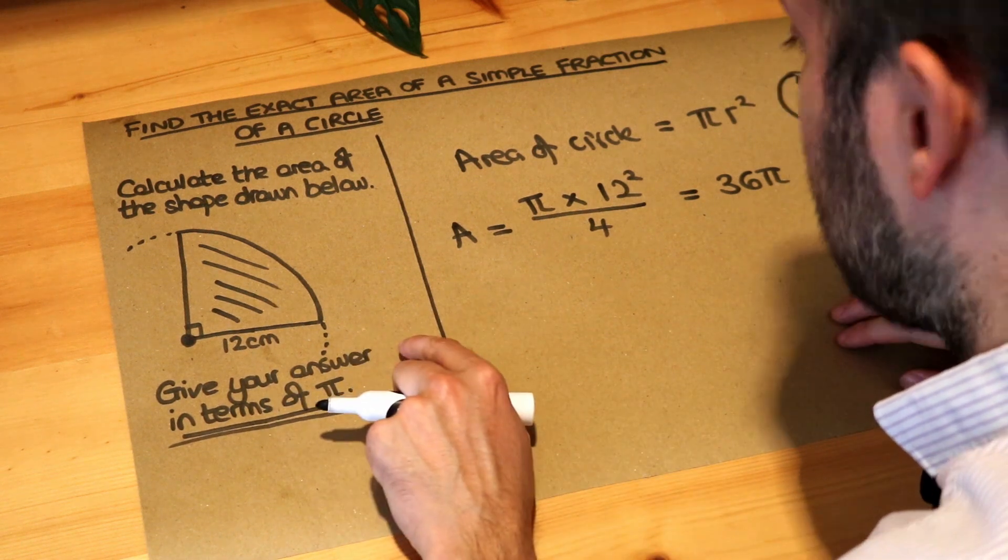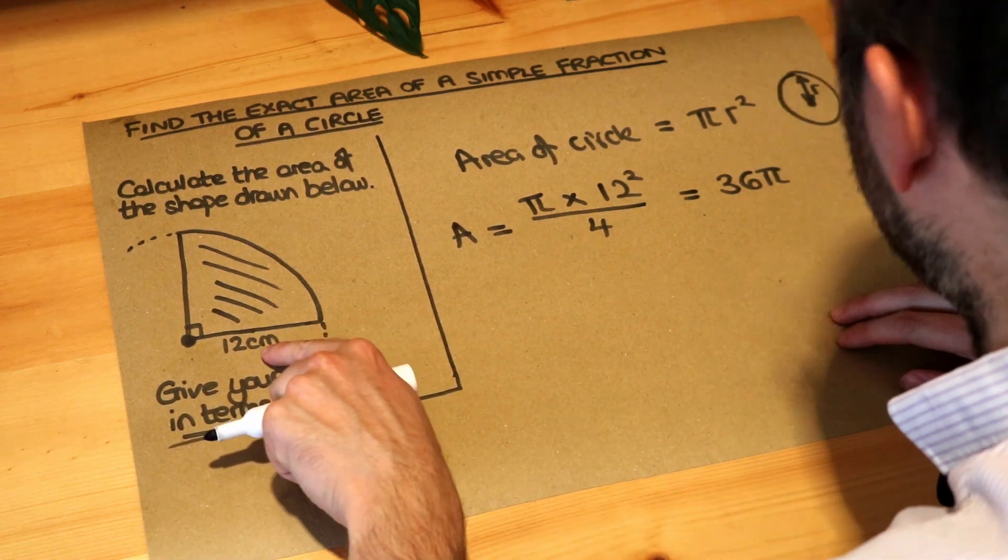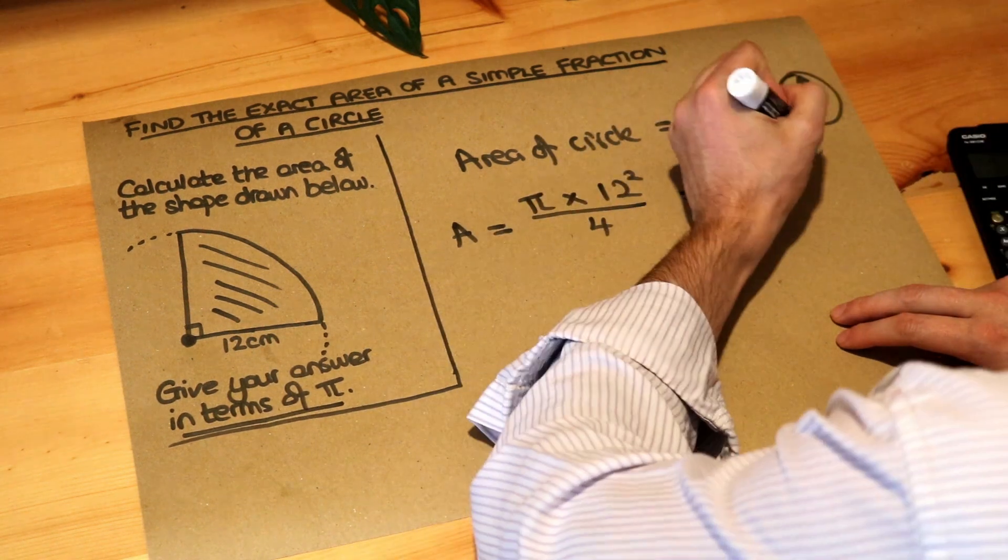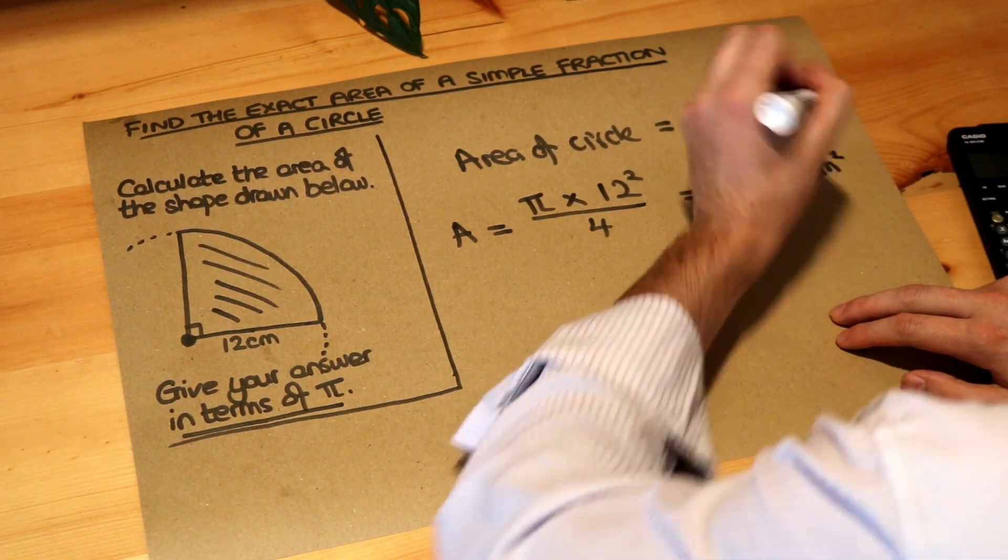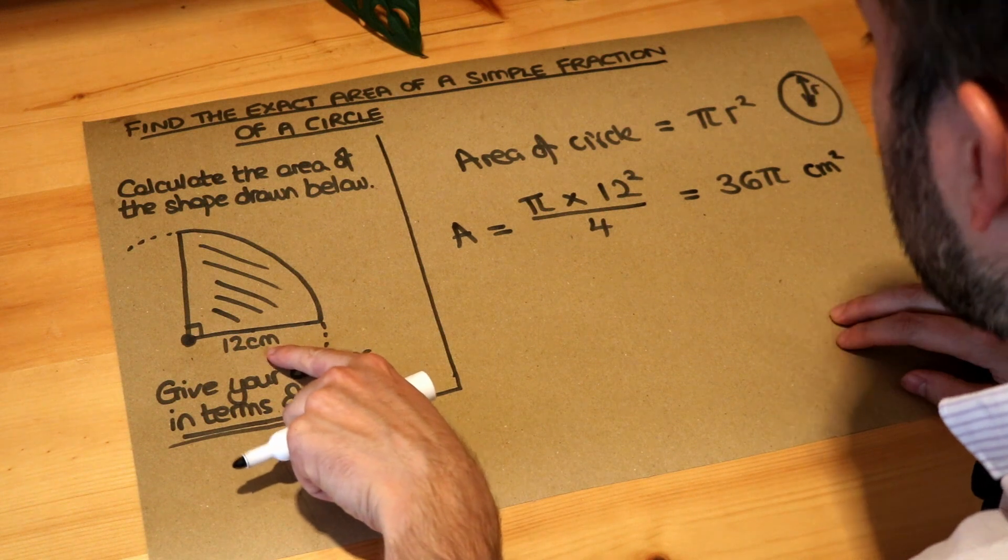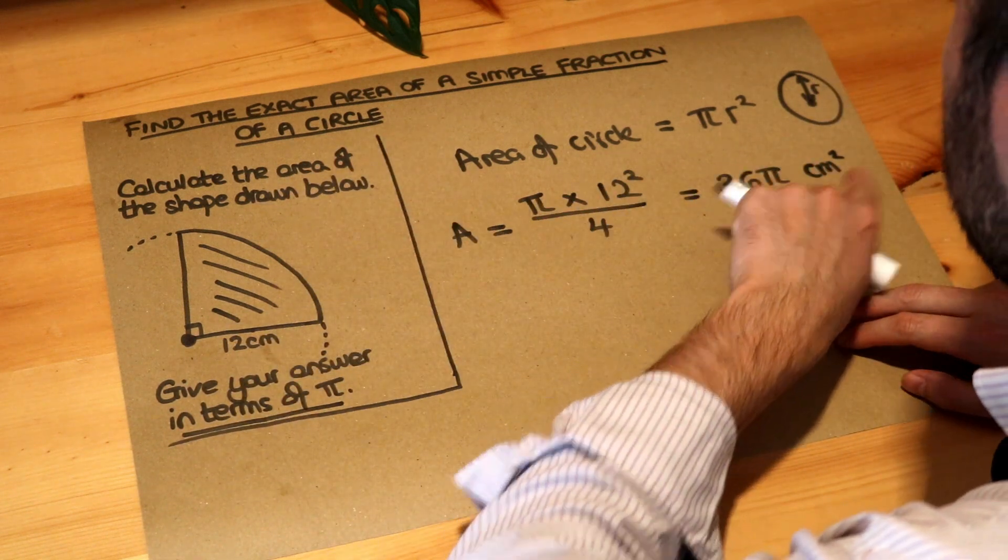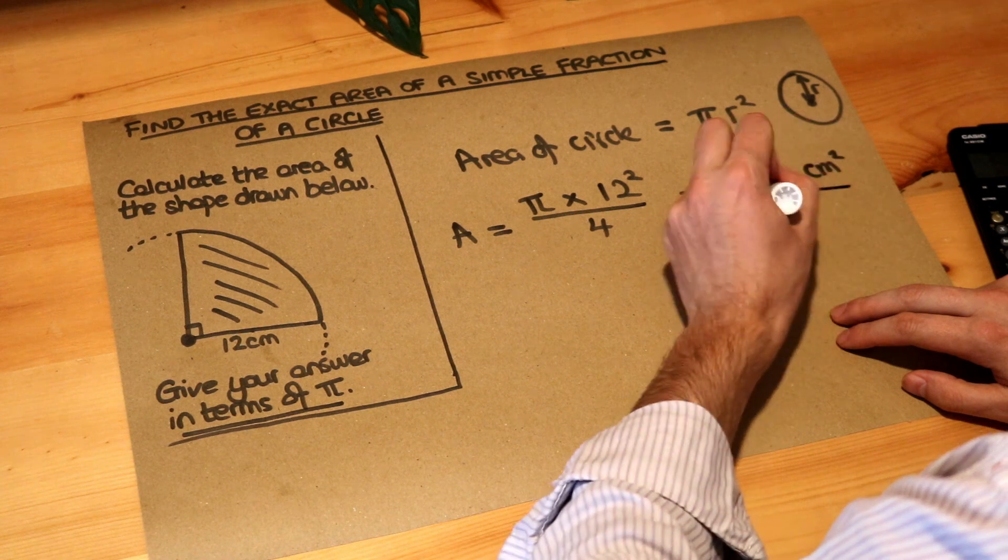The only thing I need to add is because this has got a unit of centimetres, and this is a unit of area, the unit here will be centimetres squared. Because we have a length, which is centimetres, then the area will be in centimetres squared. And that is the final answer.